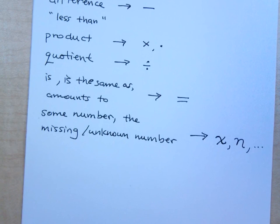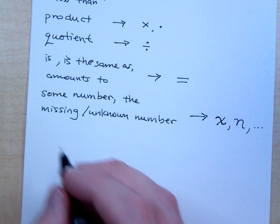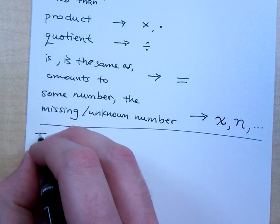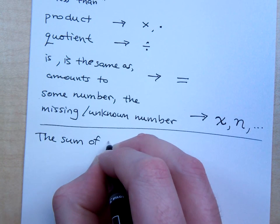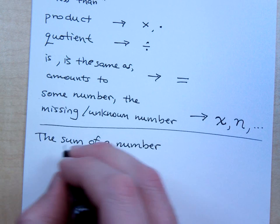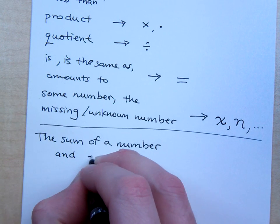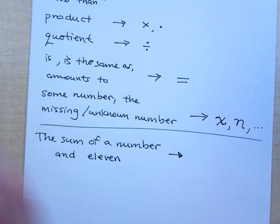And what we do is we take these words and we take these expressions and we create algebraic expressions from this. If I were to say the sum of a number and eleven, how would you write the sum of a number and eleven?